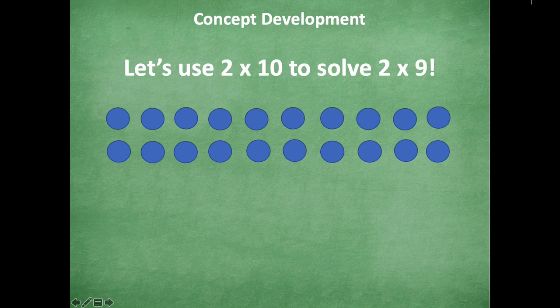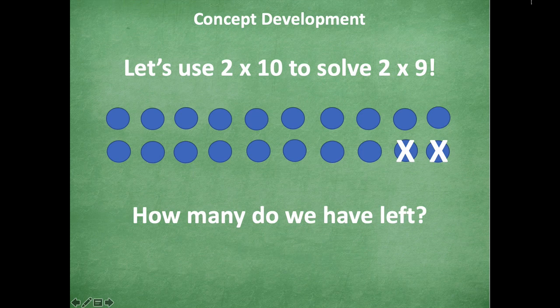Well, I know that when I'm doing this, I'm not really trying to solve 2 times 10, I'm trying to solve 2 times 9. So I know that 10, if I take away one, that gives me nine. So I'm going to take away two of these circles in our array because we're multiplying by the two. So I'm going to take away one of those and then a second one. How many do we have left now? So we have that whole row of 10 across the top, and then on the bottom we have eight. So we have 18. So 2 times 9 equals 18.